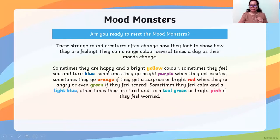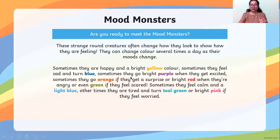Sometimes they are happy and a bright yellow color — if the monster is happy, the color is yellow. Sometimes they feel sad and turn blue — if the monster is sad, it will turn blue. Sometimes they go bright purple when they get excited. So: happy is yellow, sad turns blue, and purple when the monster is excited.